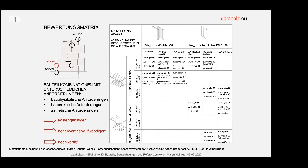Man kann sich fragen, warum die Quadranten mit Balkendecken und Holzmassivwänden nicht dargestellt sind. Das ist einfach nicht wirklich relevant für den mehrgeschossigen Holzbau. Wir haben häufig Geschossdecken im mehrgeschossigen Holzbau aus Massivholzbauteilen mit Außenwandbauteilen als holzzwischengedämmte Konstruktionen. Es gibt auch reine Holztafel- und Balken-Konstruktionen, die bis Gebäudeklasse 3 sehr gut anzuwenden sind.